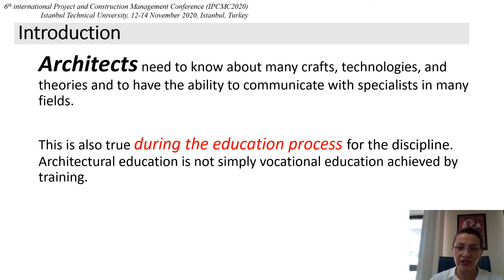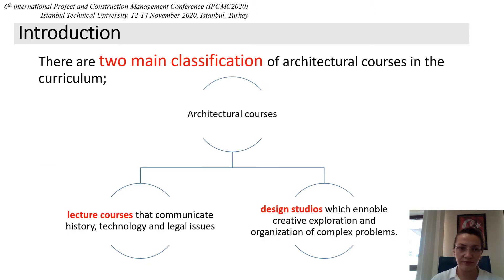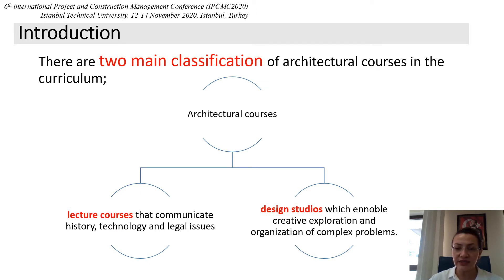Architectural education is not simply vocational education achieved by training. The architectural education process is not just about teaching how to solve problems, but also about finding what the problems actually are. In this respect, architectural education has its own specifications and is distinct from both the practice of architecture and the education of other disciplines. There are two main classifications of architectural courses in the curriculum: lecture courses that communicate history, technology and legal issues, and design studio which enables creative exploration and the organization of complex problems.